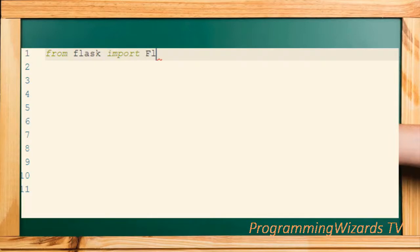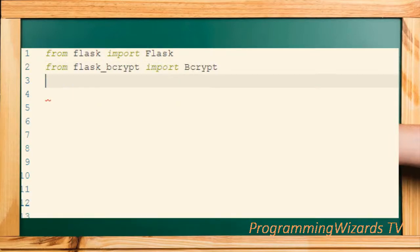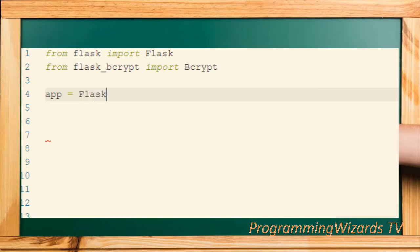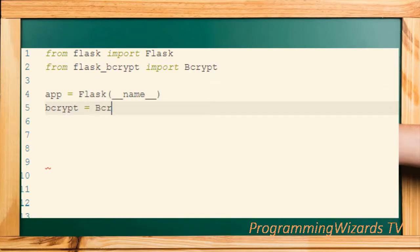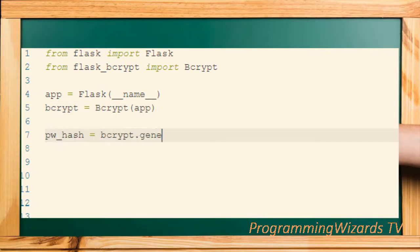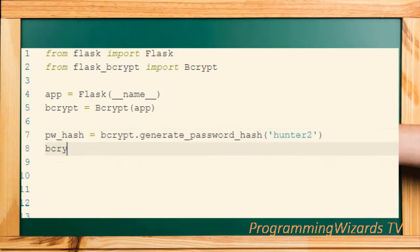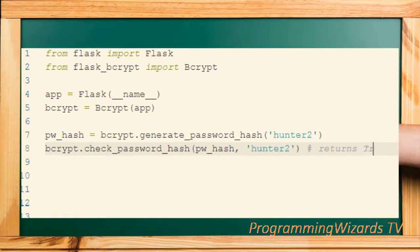Using it is very simple. Simply import the class wrapper and pass the Flask object as shown in the code on screen. From Flask, import Flask. From flask_crypt, import Crypt. Then instantiate Flask, and after that instantiate Crypt and pass it the Flask instance. Two primary hashing methods are now exposed through the Crypt object: Crypt.generate_password_hash and Crypt.check_password_hash.